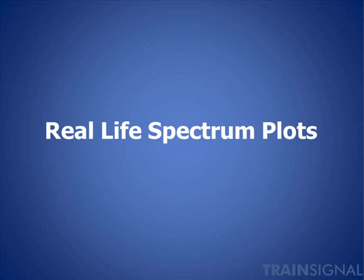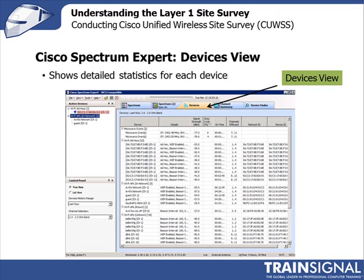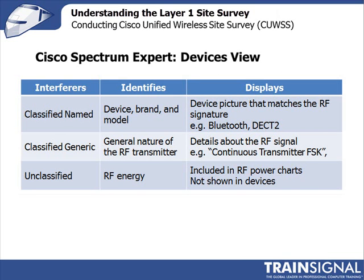Now it's time to look at some real-life spectrum plots. Having covered the different charts available in the Cisco Spectrum Expert, we want to look at the devices view. The Cisco Spectrum Expert, when it hears noise and interference in the band, will actually try to identify the devices creating that interference — which can be incredibly helpful when trying to find what's interfering with the band and potentially turning it off, moving it, or working around it. It classifies interferers in three groups.